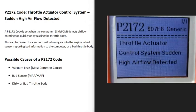Today I'm talking about a P2172 code, what it is and how you go about fixing it. A P2172 code stands for throttle actuator control system, sudden high air flow detected.